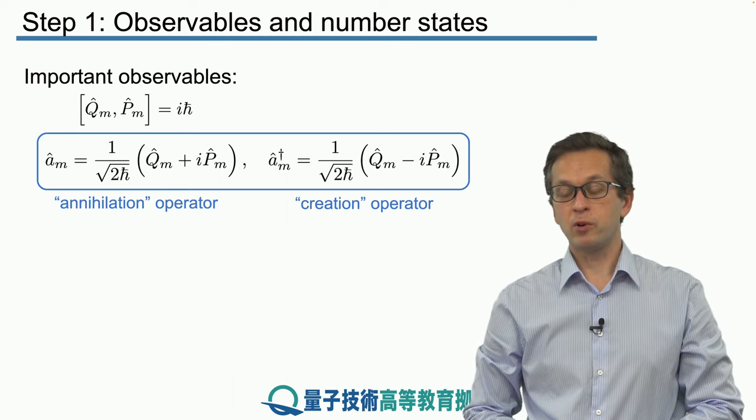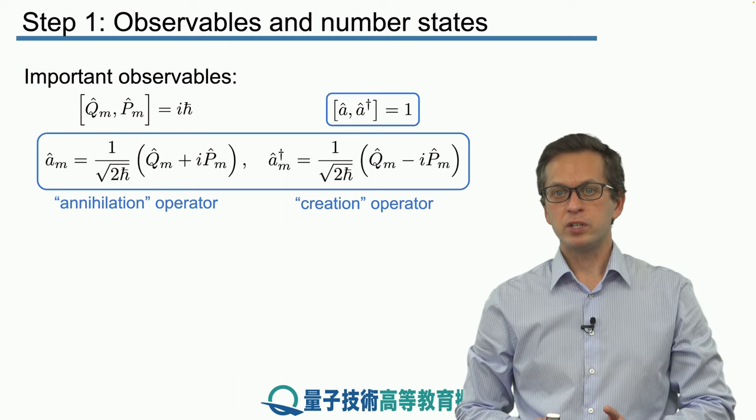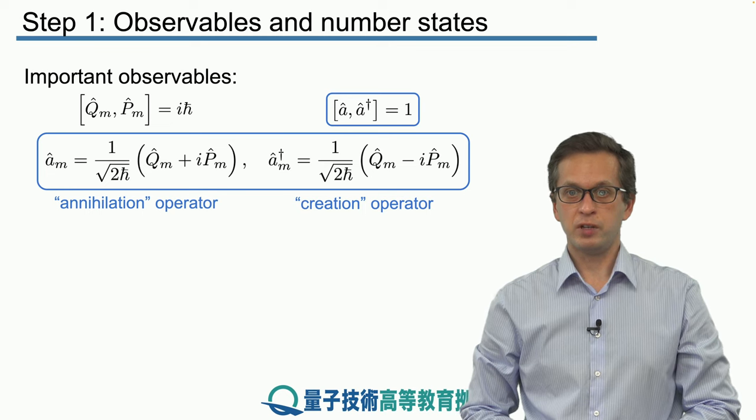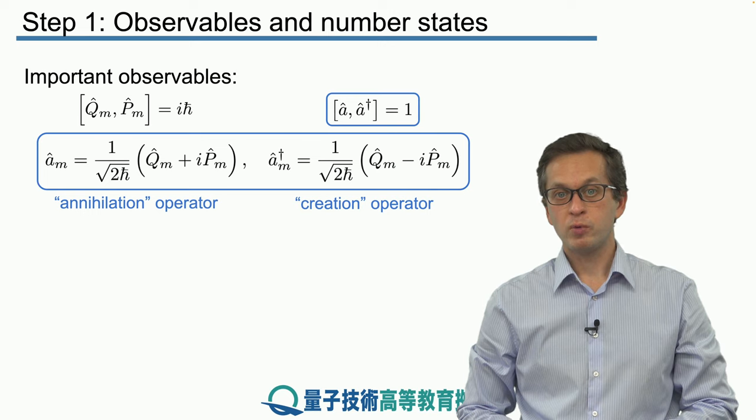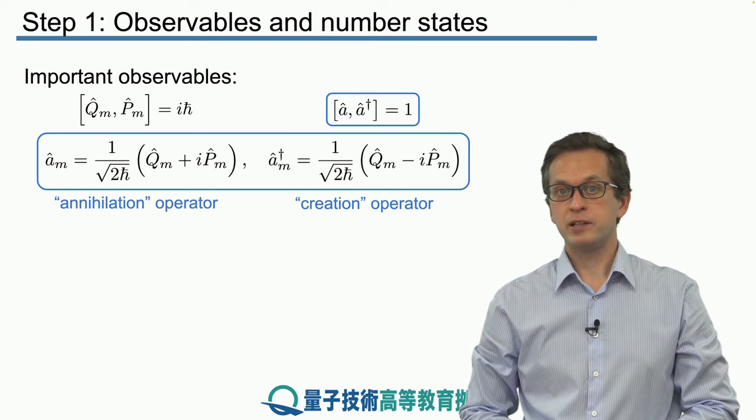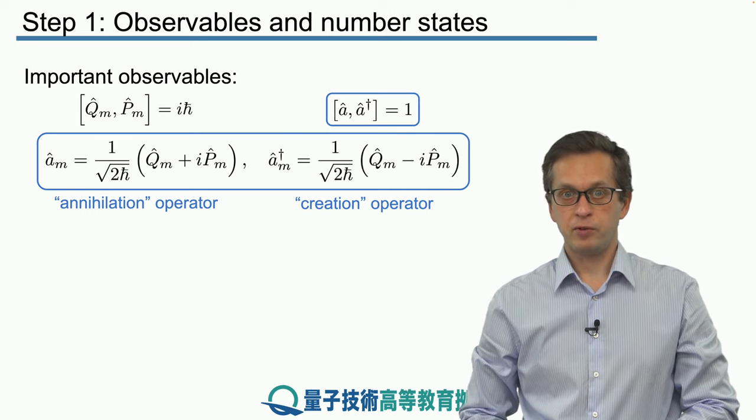They follow commutation relations which I urge you to commit to memory: the commutator [A, A†] equals one. We will use these commutation relations repeatedly in this lesson and following lessons.